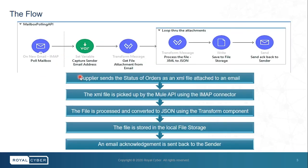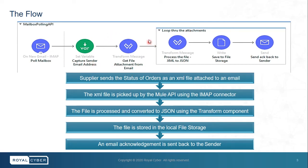Here is a quick look at the API. As soon as the email is received, the API captures the email address of the sender. It also looks at the email body for any attachments. As soon as an attachment is found, it processes the file — in our case it converts the XML file to a JSON format.